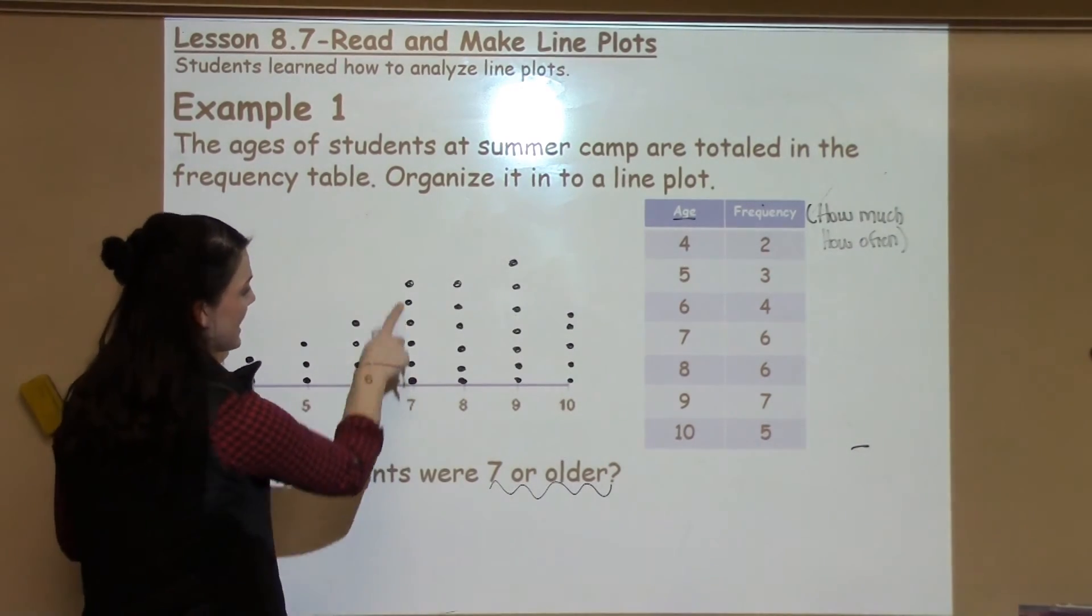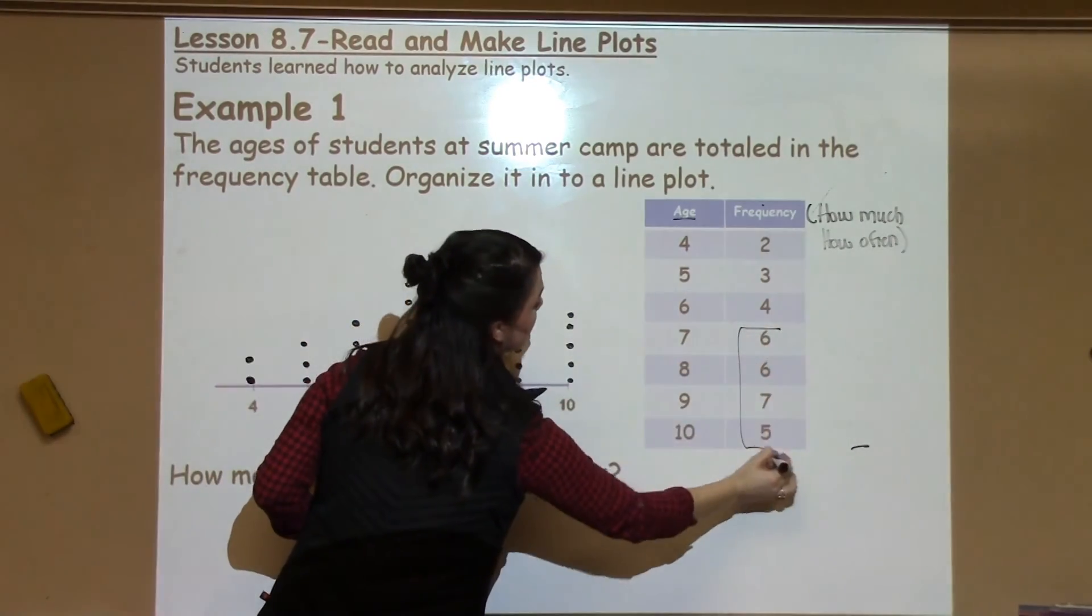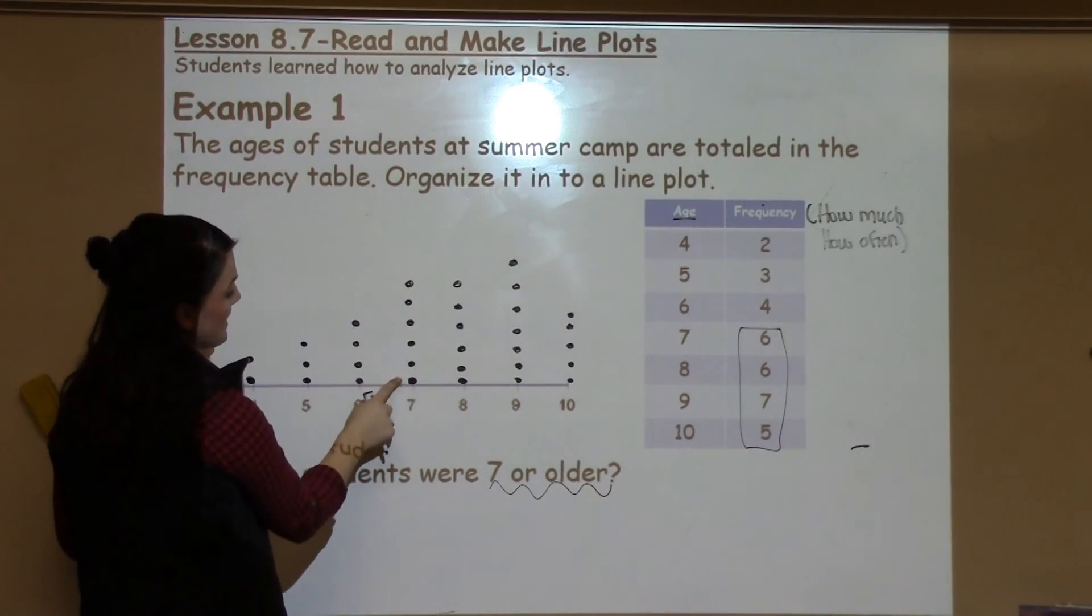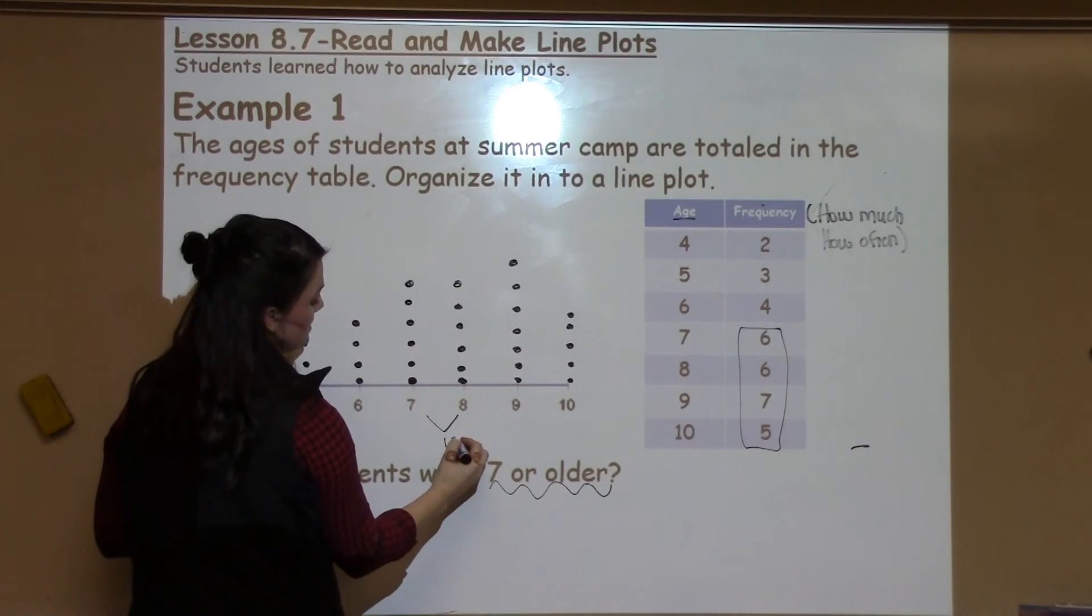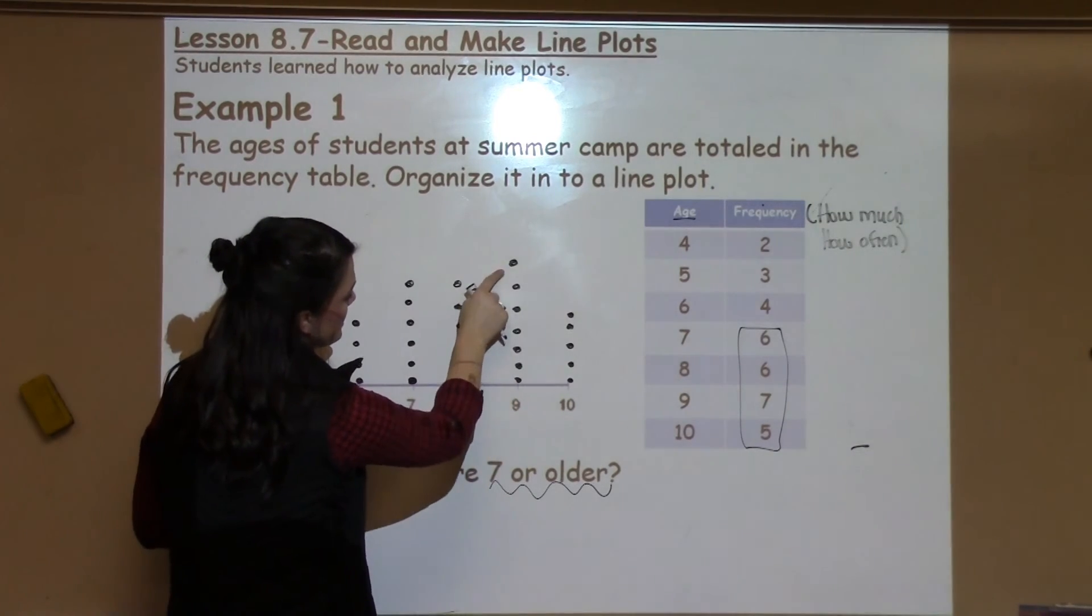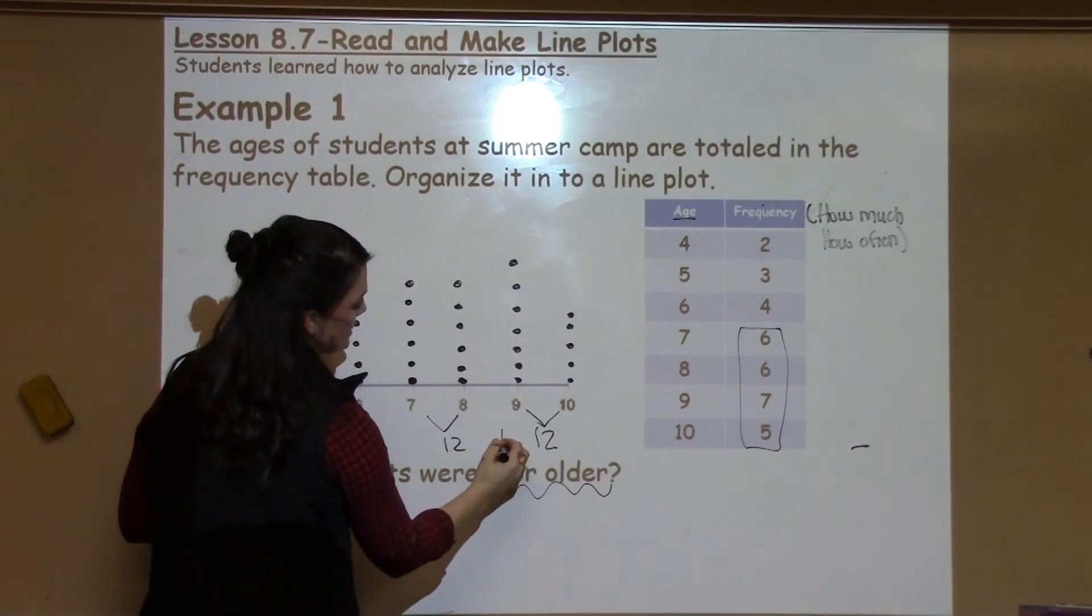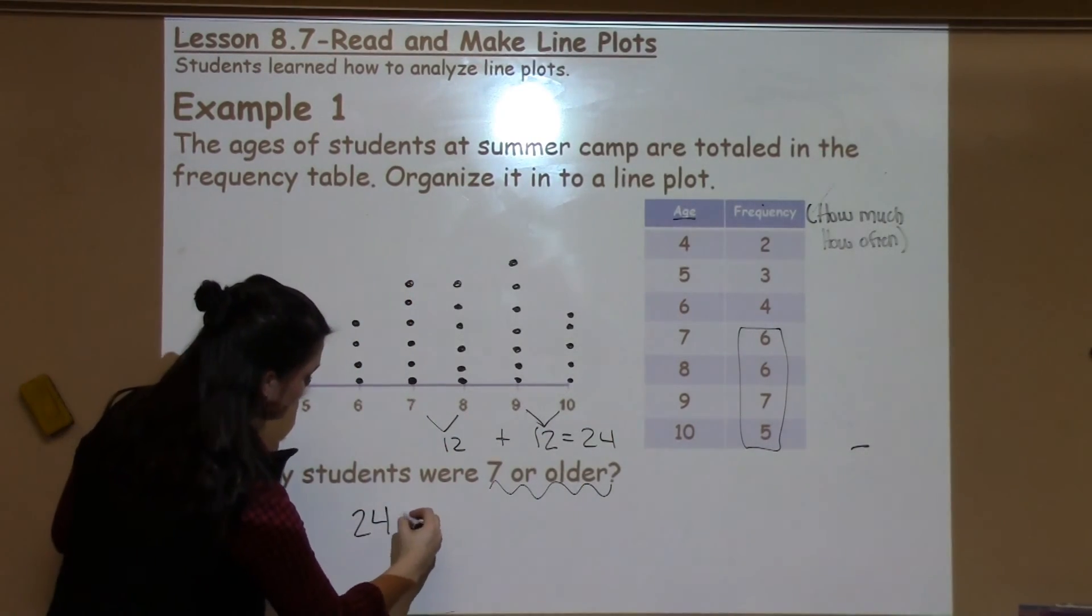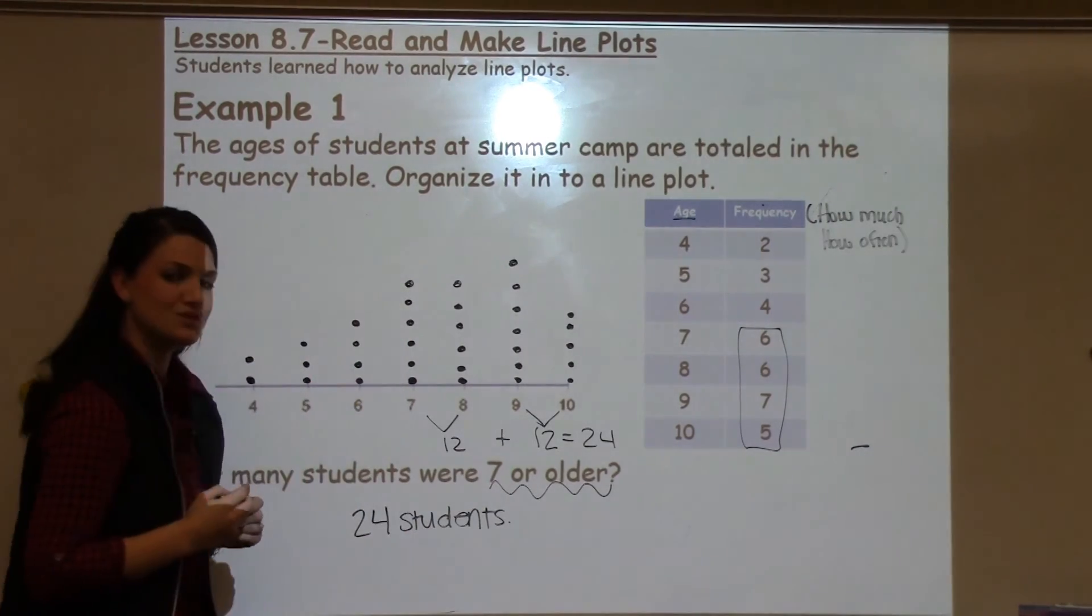So all I would have to do then is add up these dots in the plot or add up these amounts in the table. So I've got six here plus another six would be twelve. I've got seven here plus another five would be twelve, and I know that twelve plus twelve is twenty-four so I would have twenty-four students that were seven or older.